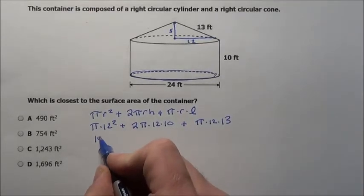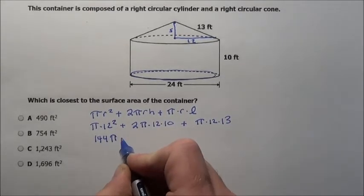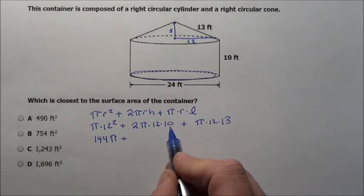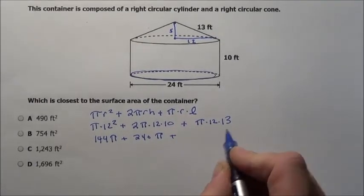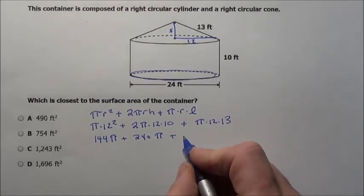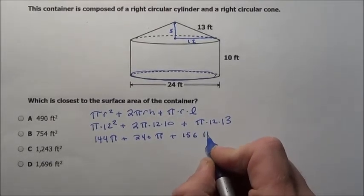When I do all this, I'm going to get 144 pi, plus that's 120 times 2 is 240 times pi, 13 times 12 is 156 pi.